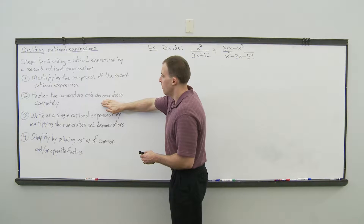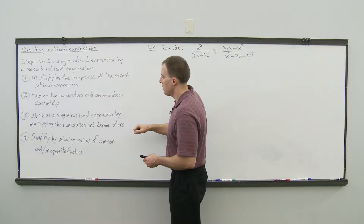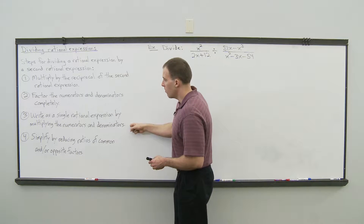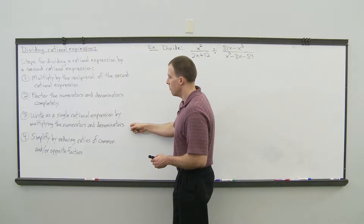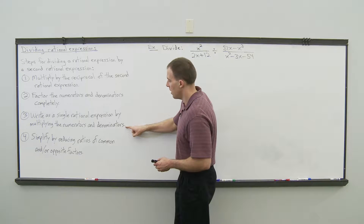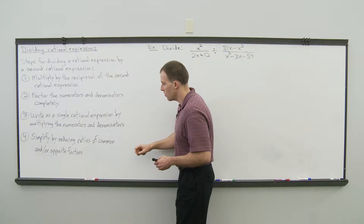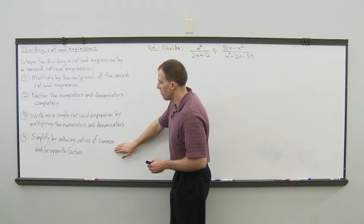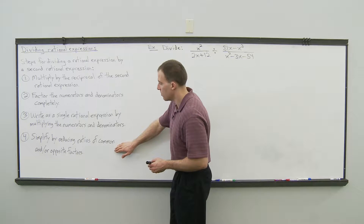Next, we'll factor the numerators and denominators completely. Third, we'll write it as a single rational expression — in other words, as a single fraction — by multiplying the numerators and the denominators. And then finally, we'll simplify by reducing ratios of common and/or opposite factors.